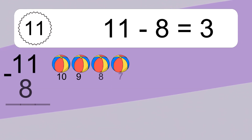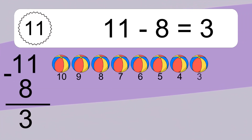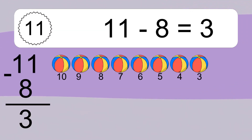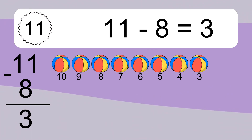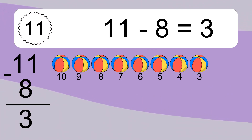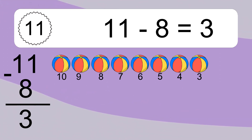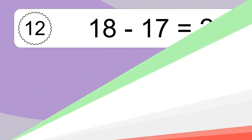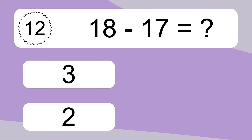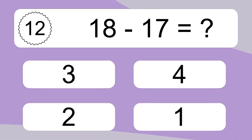11 minus 8 equals what? 11 minus 8 equals 3. Let's count it: 10, 9, 8, 7, 6, 5, 4, 3.